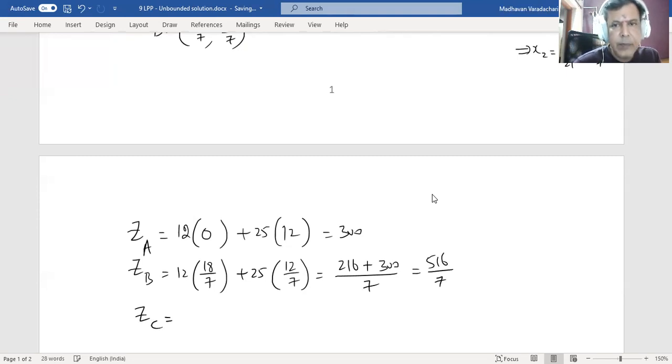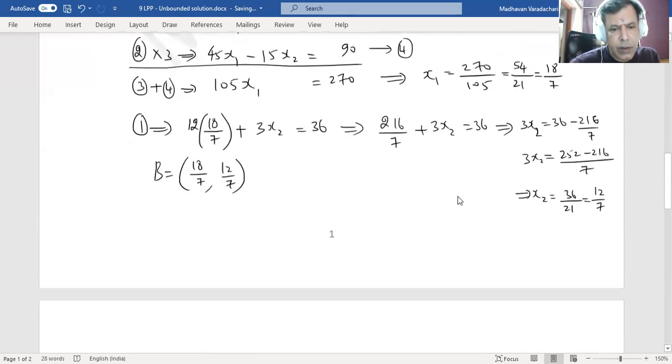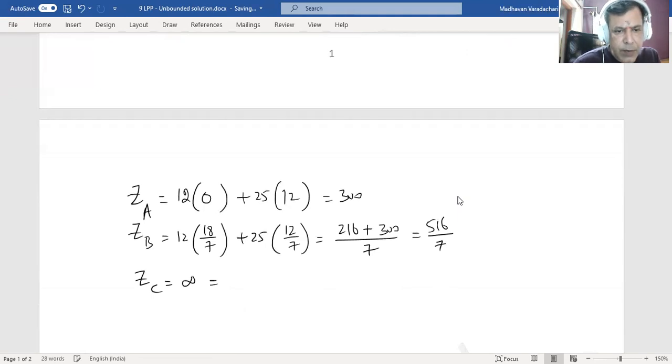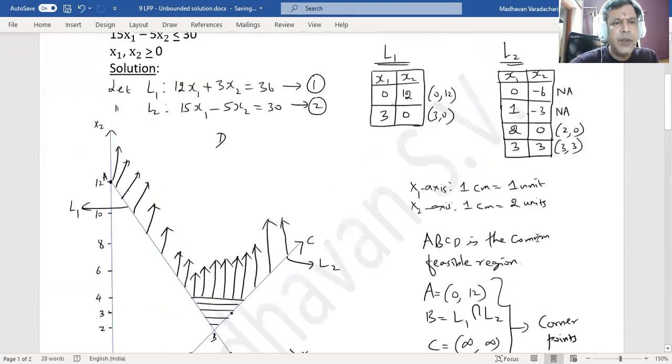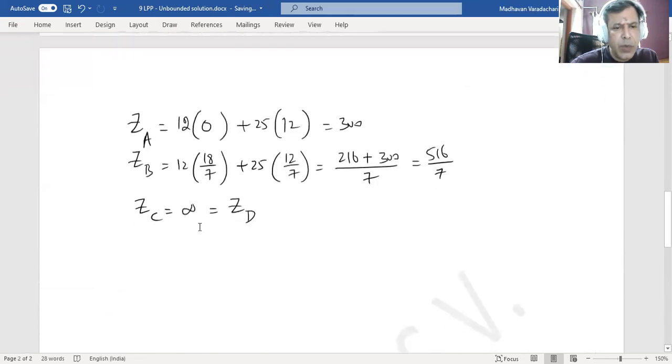Z of C: both are infinity, infinity. So the final answer will be infinity only. Even the same will be for D also. That means our objective is to find out the maximum Z value. Maximum Z value works out to be infinity. Infinity means the solution is unbounded. It can be anything. It can be maximized to any maximum number.